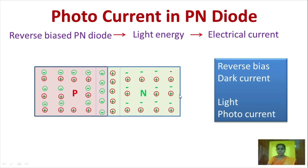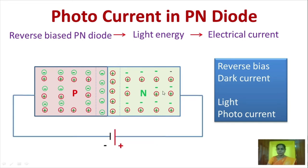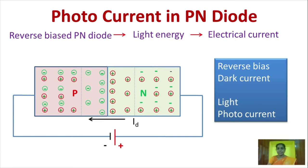When PN junction is reverse biased — reverse biased means the P side of the diode is connected to the negative terminal of the battery and the N side of the diode is connected to the positive terminal of the battery — the depletion region becomes wide. Due to the minority carriers, a small current flows through the device, which is termed as dark current because the device is not exposed to any radiation.